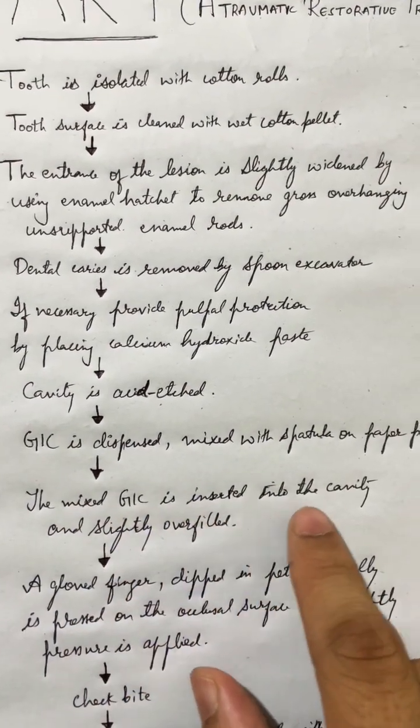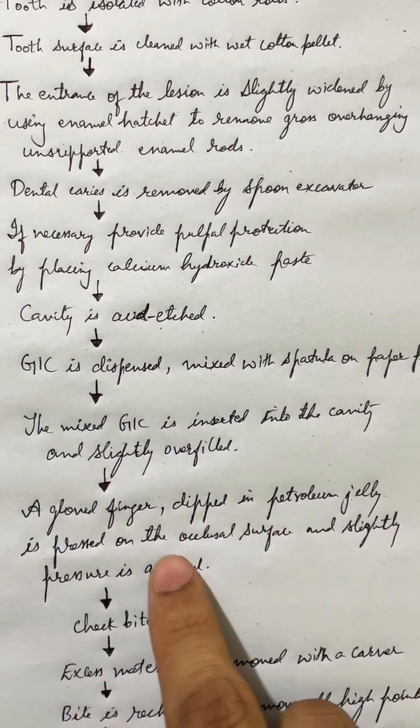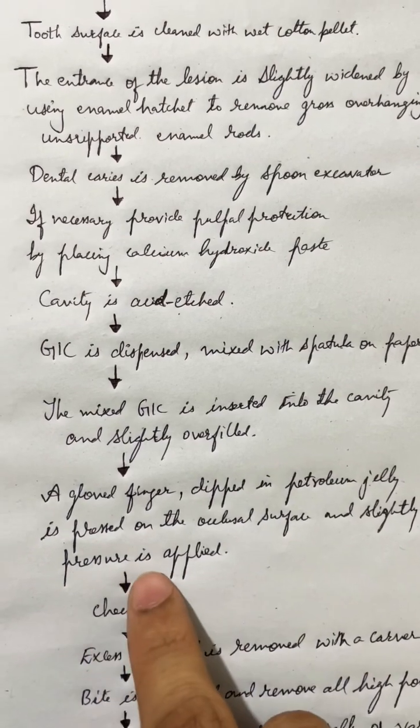The mixed GIC is inserted into the cavity and slightly overfilled. A gloved finger dipped in petroleum jelly is pressed on the occlusal surface and slight pressure is applied.